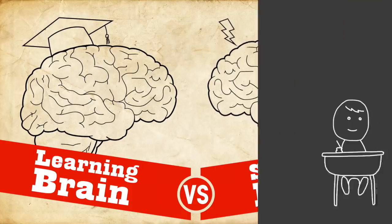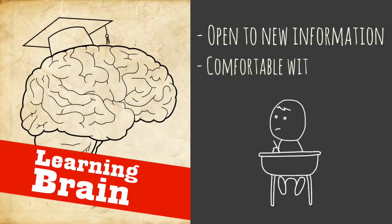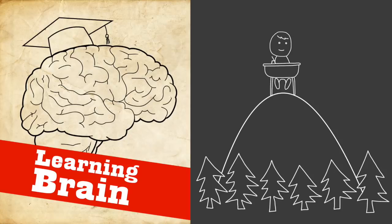So learning brain is this brain that's open to learning new information and it's completely okay with ambiguity and grayness and vagueness. And it sees the big picture. It pulls back and is on the balcony, can look over the forest and figure out what's going on.